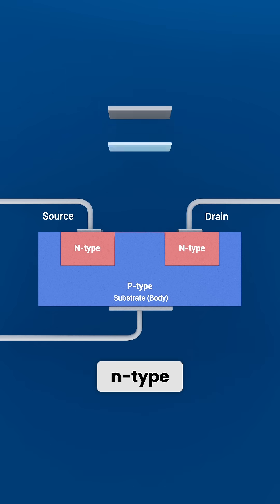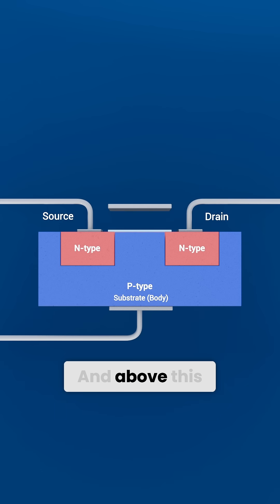Between the two N-type regions is an oxide layer, usually a thin layer of silicon dioxide, and above this oxide sits the gate electrode, often polysilicon or metal, bonded out to the gate pin.